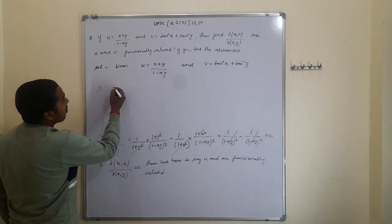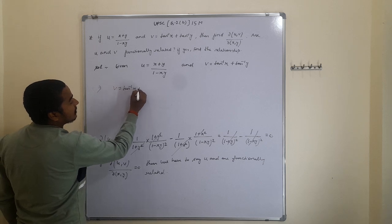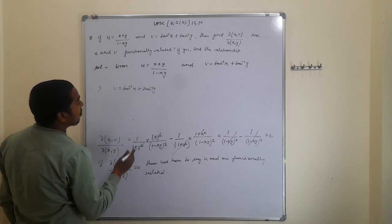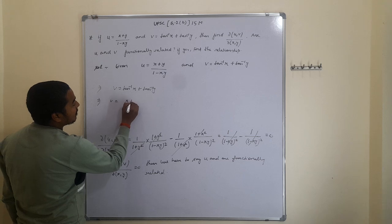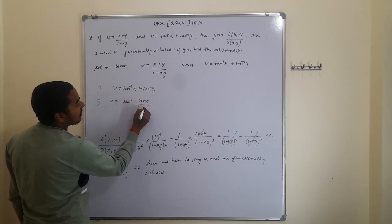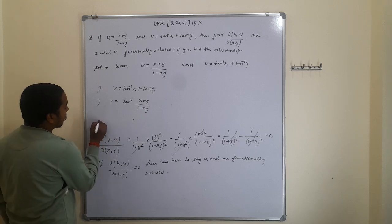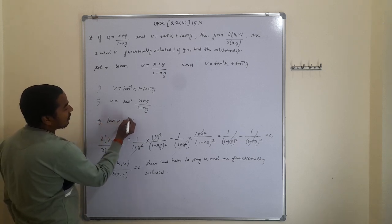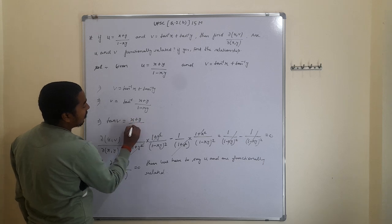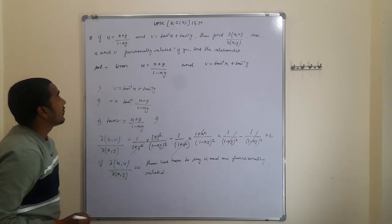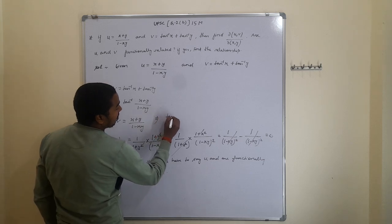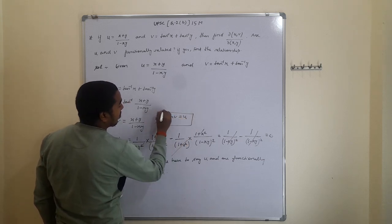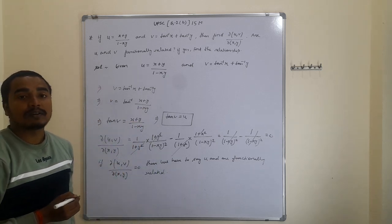To find the relationship: v = tan⁻¹(x) + tan⁻¹(y). Using the identity, tan⁻¹(x) + tan⁻¹(y) = tan⁻¹[(x + y)/(1 - xy)]. We recognize that (x + y)/(1 - xy) = u. Therefore, v = tan⁻¹(u). This is the functional relationship between u and v. Thank you for watching — this is an important exam question.